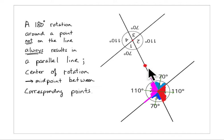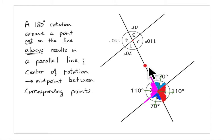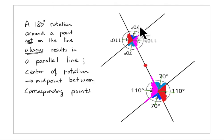Here it is — this is the center of rotation. I took this entire image and rotated it 180 degrees. Since it is a rotation, nothing has changed: these angles have not changed at all. So this is 70 degrees, this is 70 degrees, 110 degrees, 110 degrees. Going through the intersection, these are vertical angles: 110 degrees and 110 degrees, 70 degrees and 70 degrees.